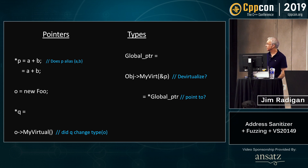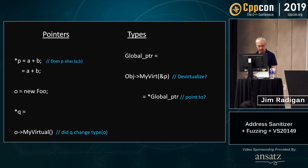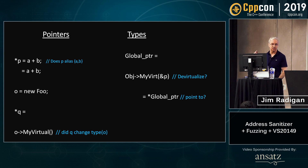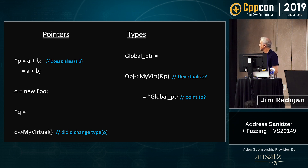If you go to the lower left quadrant, Q might alias O — as a result, you wouldn't have a clue what that virtual function call is actually going to be. Pointer analysis makes it very hard to do full analysis through the call trees, because you don't know what indirect function calls are going to unless you understand what the types are. If you look at type propagation, it affects the alias analysis. If I don't know what that pointer is pointing to, I can't devirtualize it, and I have no idea what's going to happen when I dereference the global pointer.